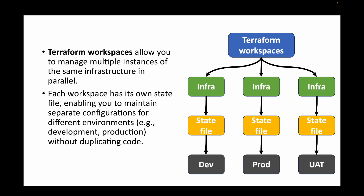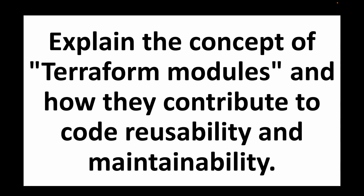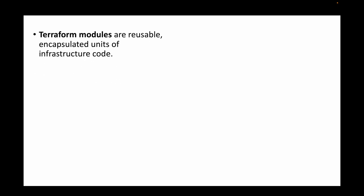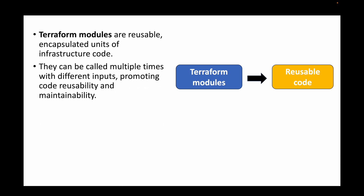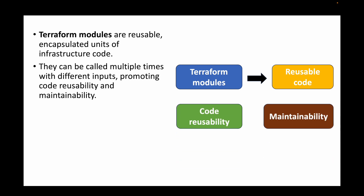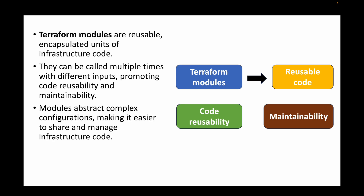The next question is: explain the concept of Terraform modules and how they contribute to code reusability and maintainability. Terraform modules are used whenever we want to make our code reusable. These are encapsulated units of infrastructure code that can be called multiple times with different inputs, promoting code reusability and maintainability. We write the main configuration files once and then call them any number of times to create infrastructure. Modules abstract complex configurations, making it easier to share and manage infrastructure code.